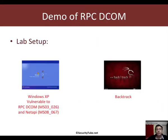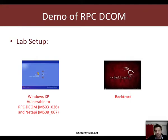For this video, the lab setup we require is a Windows XP machine vulnerable to the MS03-026 and the MS08-067 vulnerability. We will use Backtrack as the attacker machine. In case you do not have this, you could try and access the online labs to use this vulnerable machine.